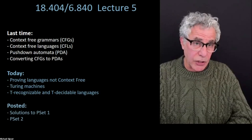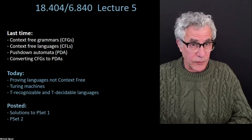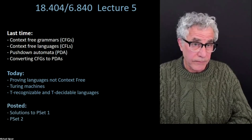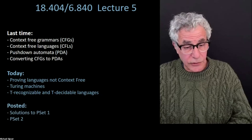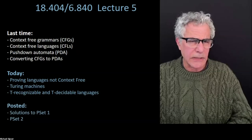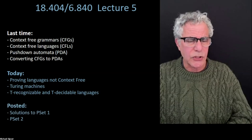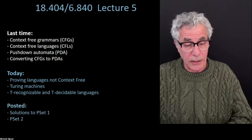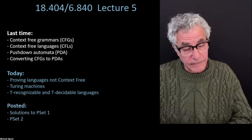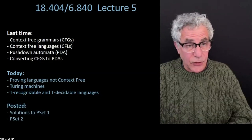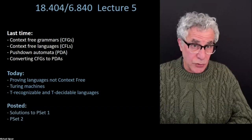Problem number three is about queue automata — what happens if you take a pushdown automaton but instead of a stack you add a queue. It turns out that model is very powerful, equivalent in power to a Turing machine. For problem three you'll also need Thursday's lecture to really see examples of how you do that kind of thing. So by the end of Thursday you'll be able to do everything except problem six.